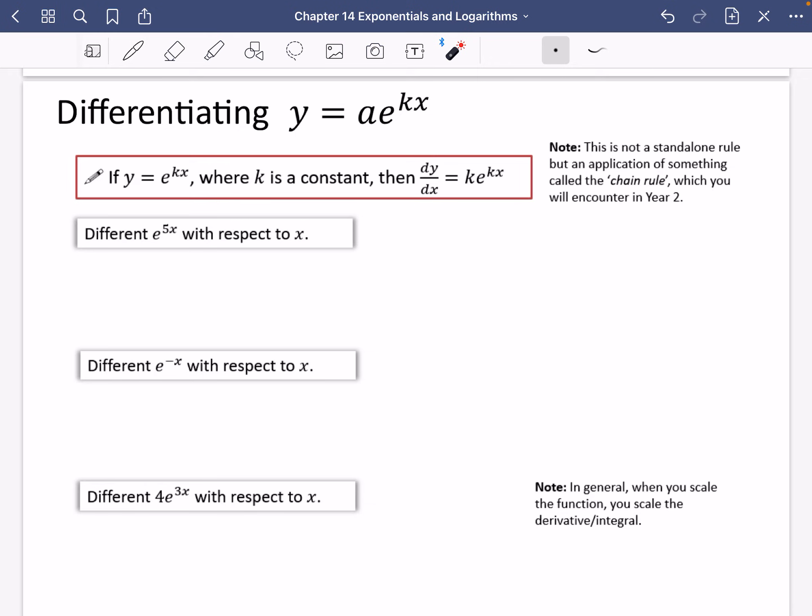So the first question says, differentiate e^(5x) with respect to x. So I'm going to differentiate with respect to x, hopefully you're familiar with this notation, e^(5x). Well, using that rule, k here is 5. So it's just going to be 5e^(5x).